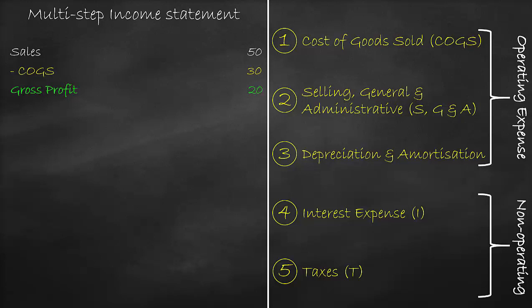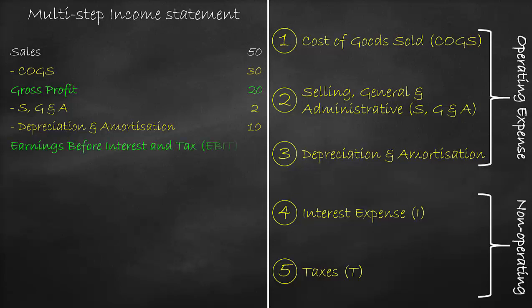Gross profit means the profit that a firm generates after paying off its cost of production. Then, we deduct the second level of expense, which is the selling, general, and administration expense of $2 million. Then, we deduct the third level of expense, which is depreciation and amortization of $10 million. This gives us the second level of profit, called earnings before interest and tax, or EBIT, of $8 million — calculated as $20 million minus $2 million minus $10 million.